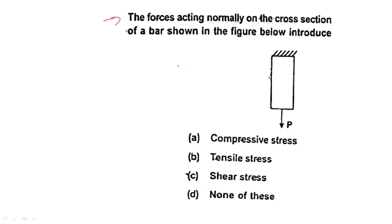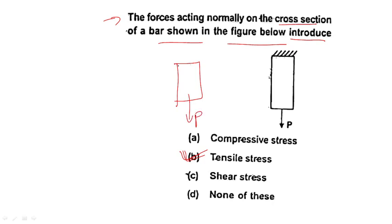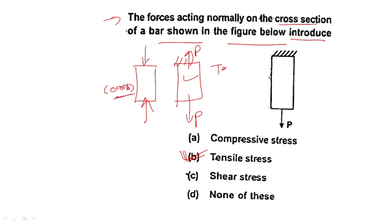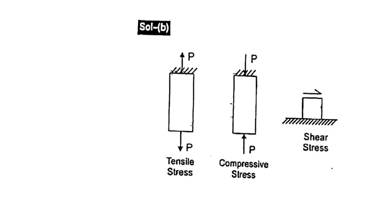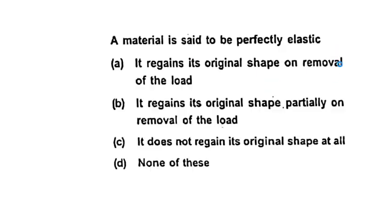Next question: The force acting normally on a cross section of a bar introduces tensile stress. If the load is applied along the member and one end is fixed, the stress is tensile. If load is applied from both sides pushing inward, it is compression. When load acts in the sideways direction, it is shear stress.